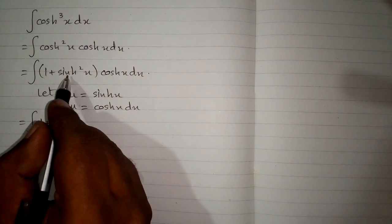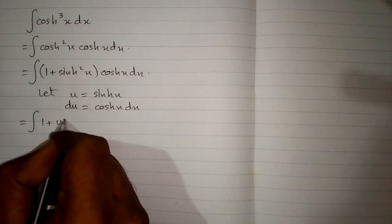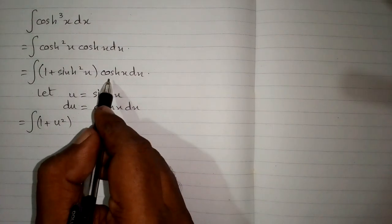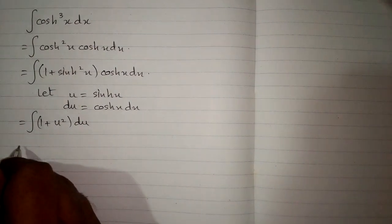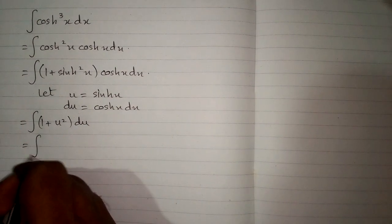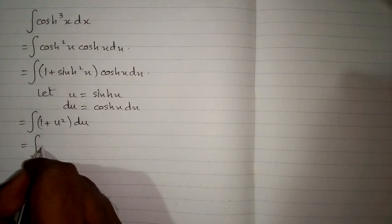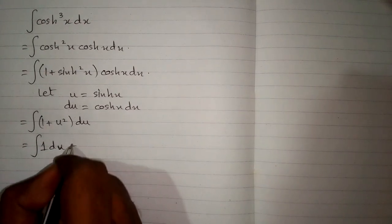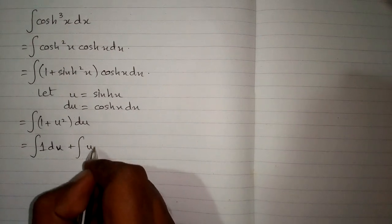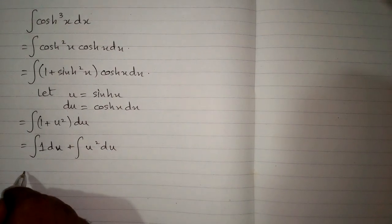So we have u square, and in place of hyperbolic cos x dx we will put du. Now we will integrate both terms, so the integral of 1 is u and the integral of u square is 1 upon 3 u cube plus c.